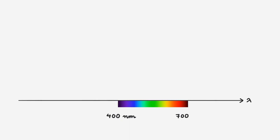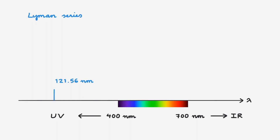We're now going to draw the spectral series of hydrogen on a horizontal axis corresponding to the photon wavelength. As a reference, we include the visible spectrum, which runs roughly between 400 nm and 700 nm. For lower wavelengths we get the ultraviolet or UV region, and for longer wavelengths we get the infrared or IR region. Placing the Lyman series on this axis: the Lyman alpha line at 121.56 nm falls well within the UV range. The remaining lines fall progressively closer together, all the way to the Lyman limit at 91.17 nm. This diagram shows that the entire Lyman series falls within the UV range of the electromagnetic spectrum.